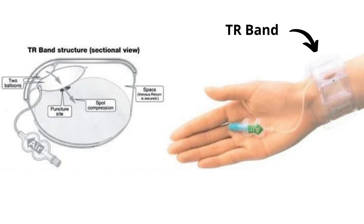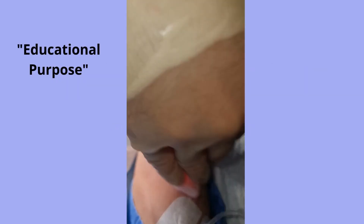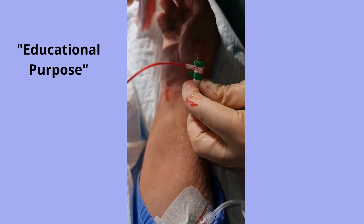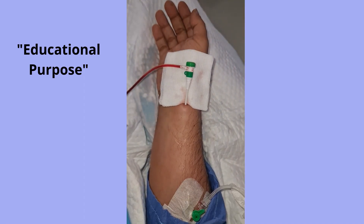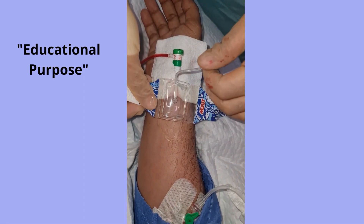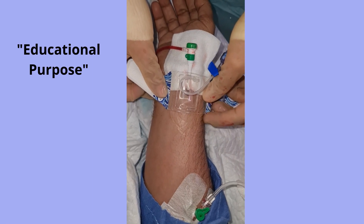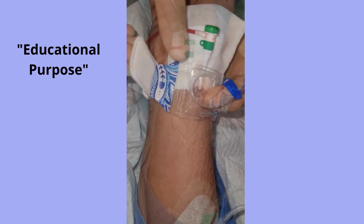Upon completion of the procedure, withdraw the introducer sheath about two to three centimeters. Make sure the site is clean with sterile saline and dry it completely before the band is placed on the wrist. Apply the TR band compression device by aligning the marker, which is located on the compression balloon, proximal to the puncture site.